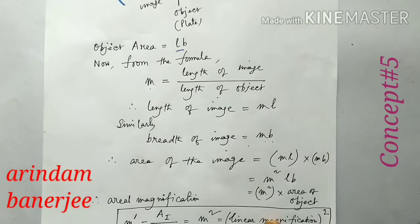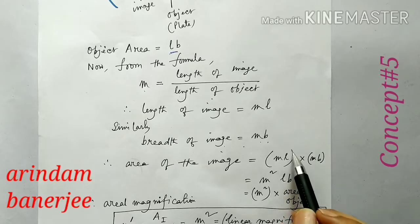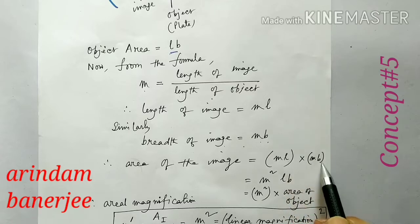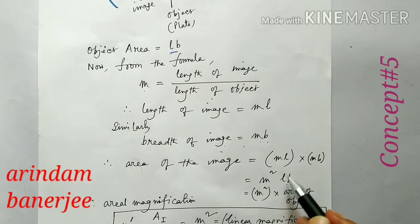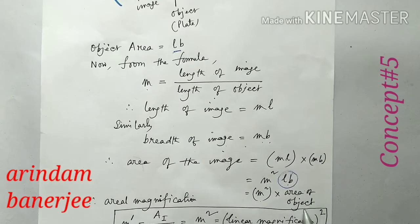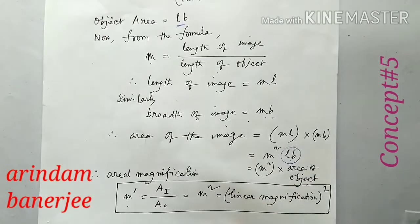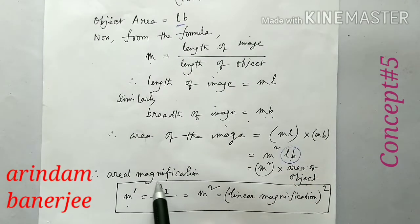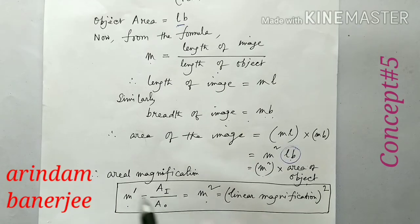So the area of the image becomes image length into image breadth, that is mL into mB, which equals m² times LB. Now LB is the object area. So the image area equals m² into the area of the object. That is, areal magnification M' is given by area of the image divided by area of the object, which equals m².